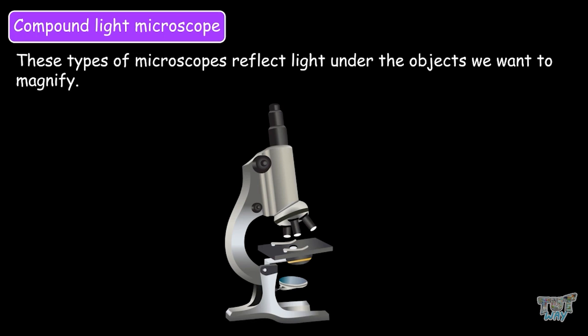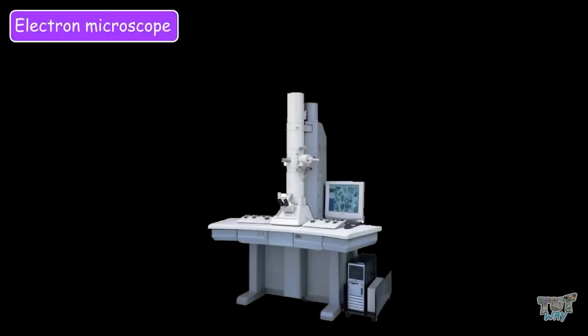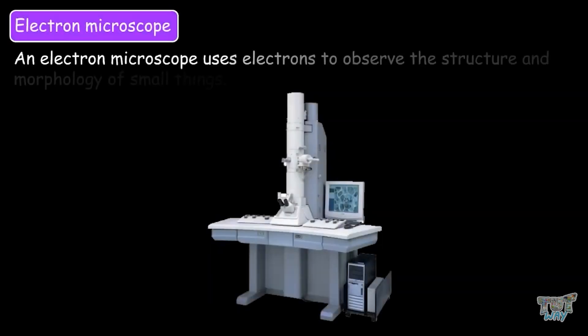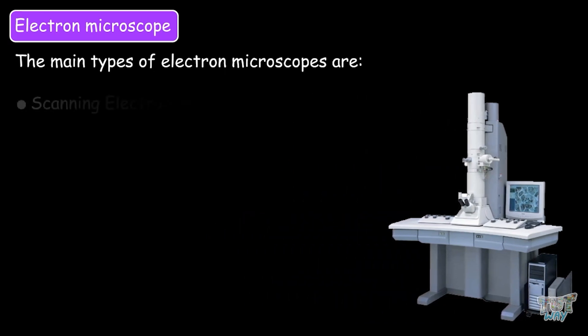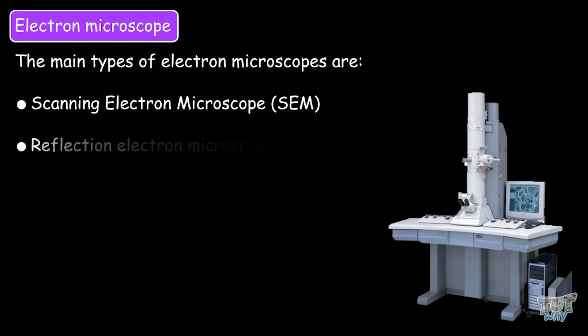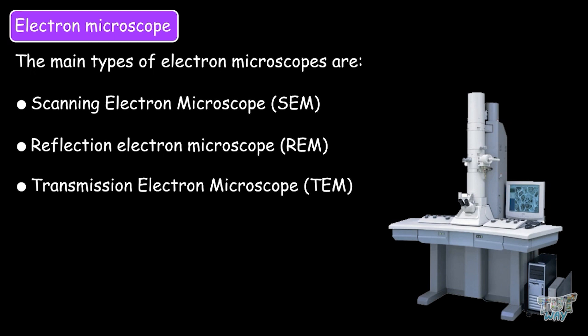Another type of microscope is the electron microscope. An electron microscope uses electrons to observe the structure and morphology of smaller things. The main types of electron microscopes are scanning electron microscope, reflection electron microscope, transmission electron microscope, and the scanning transmission microscope. So these are all the types of electron microscopes. They are highly advanced microscopes.